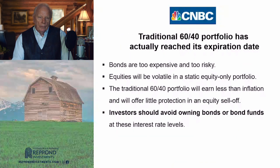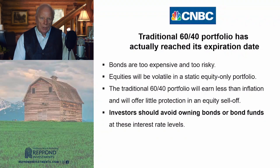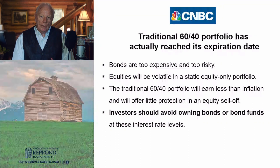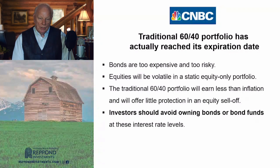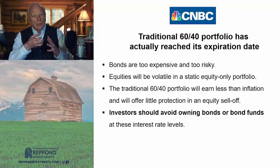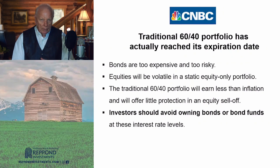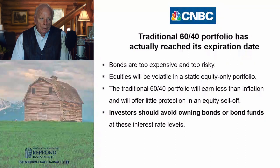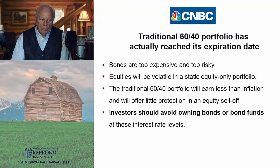Another article from CNBC — an op-ed piece — had the headline: 'Traditional 60/40 portfolio has actually reached its expiration date.' The talking points: bonds are too expensive and too risky; equities will be volatile in a static equity-only portfolio; the traditional 60/40 portfolio will earn less than inflation and will offer little protection in an equity sell-off; investors should avoid owning bonds or bond funds at these interest rate levels.